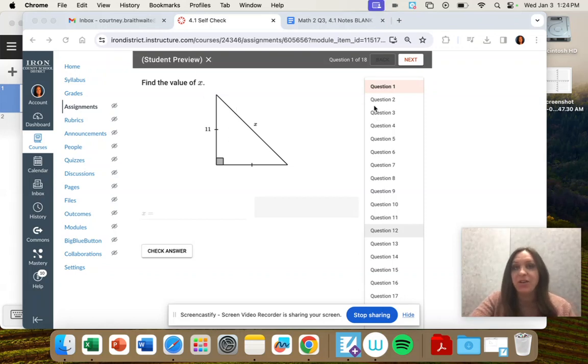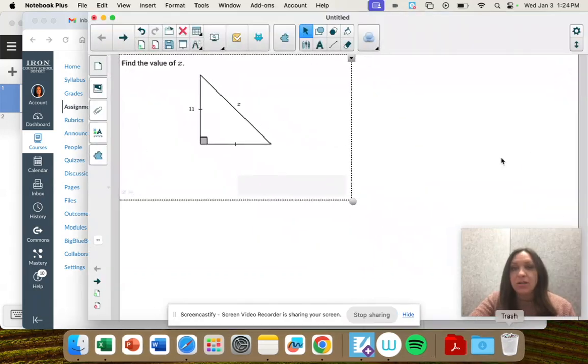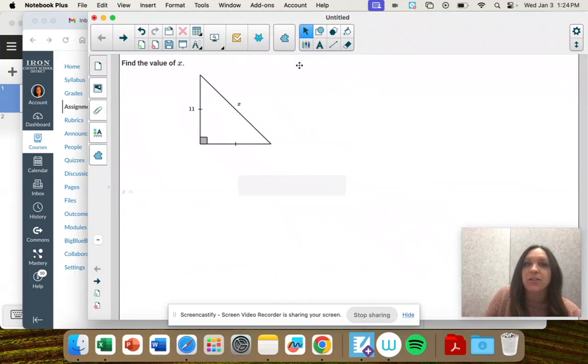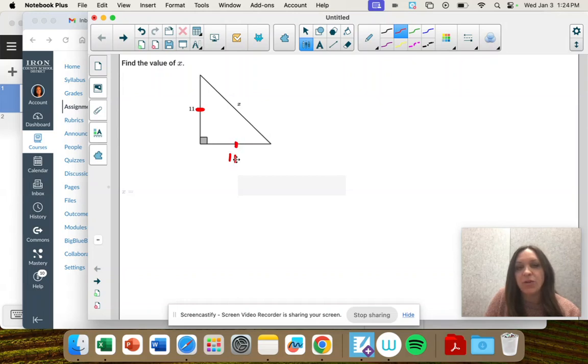Question 1, find the value of x. So we have this triangle, and because these two sides are the same length, that's what these tick marks mean, they're both 11, that means that these angles are also the same.